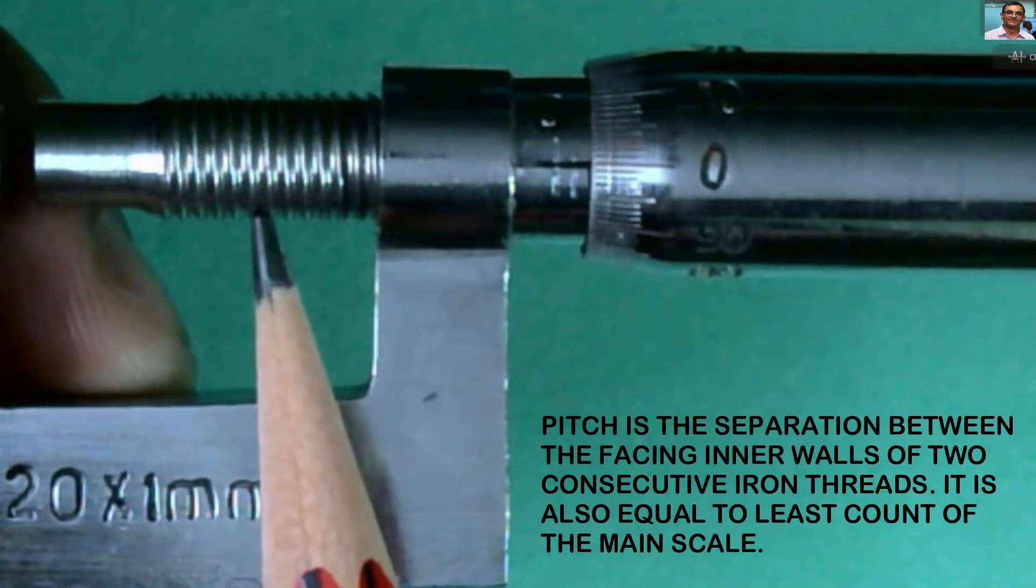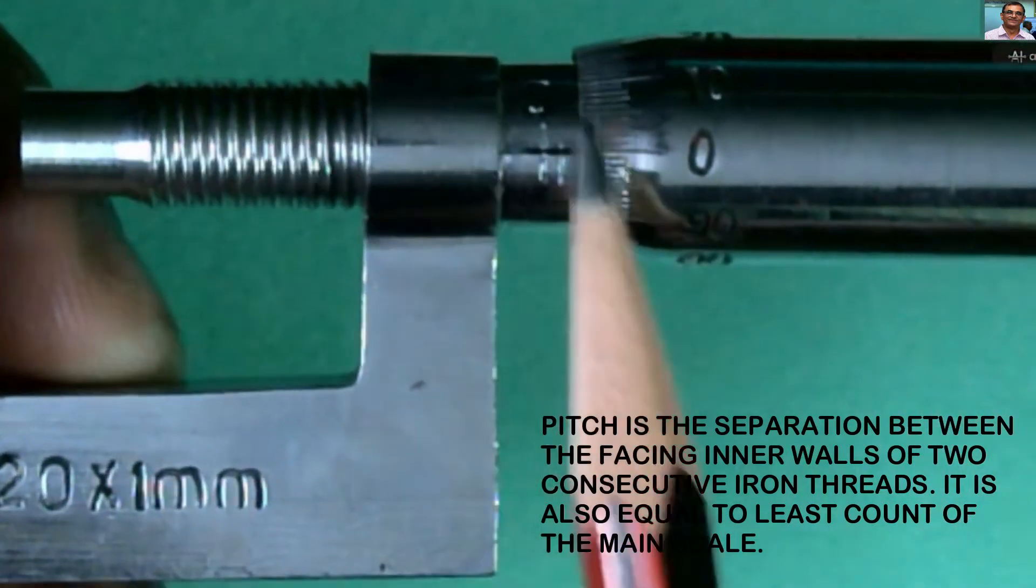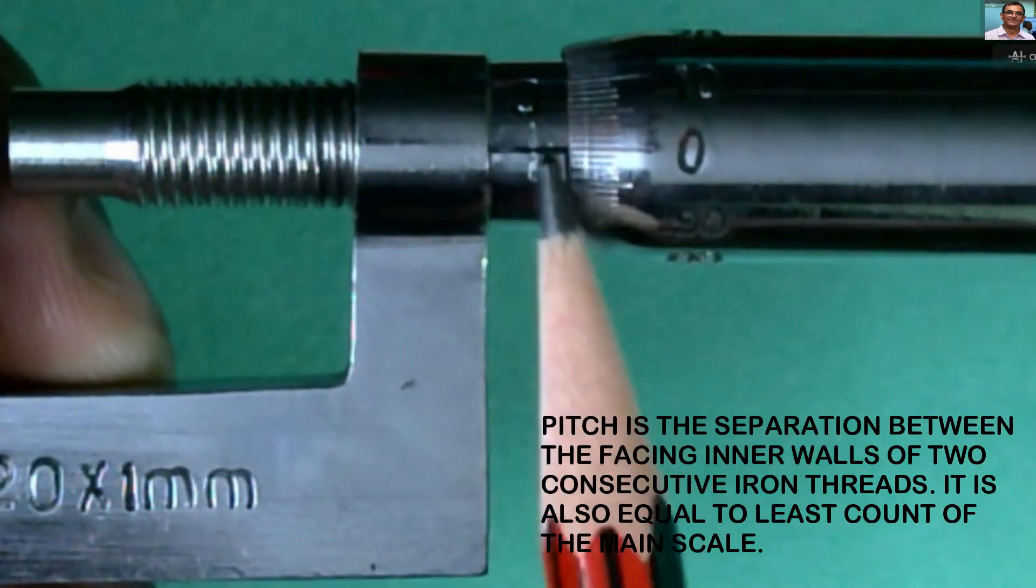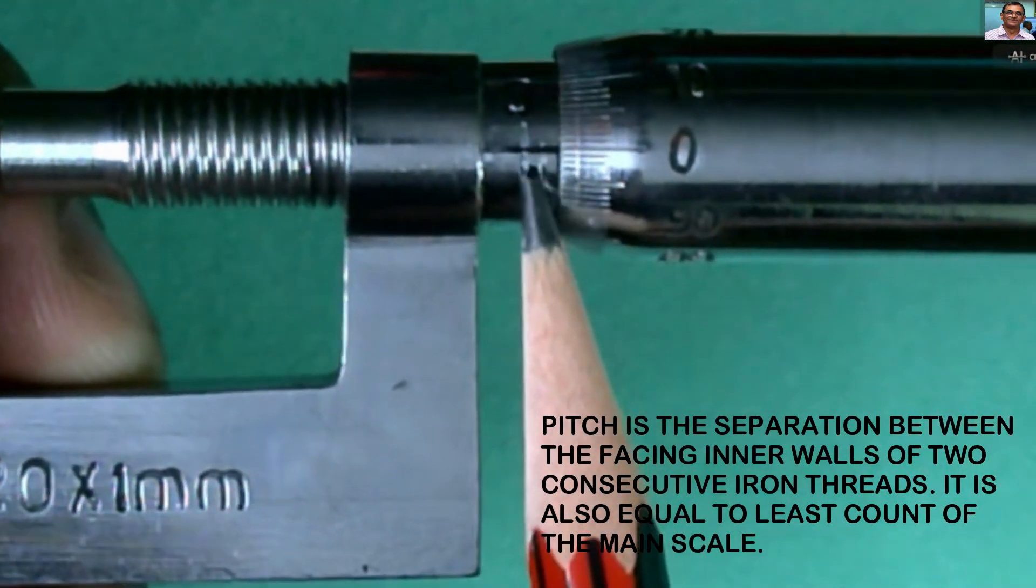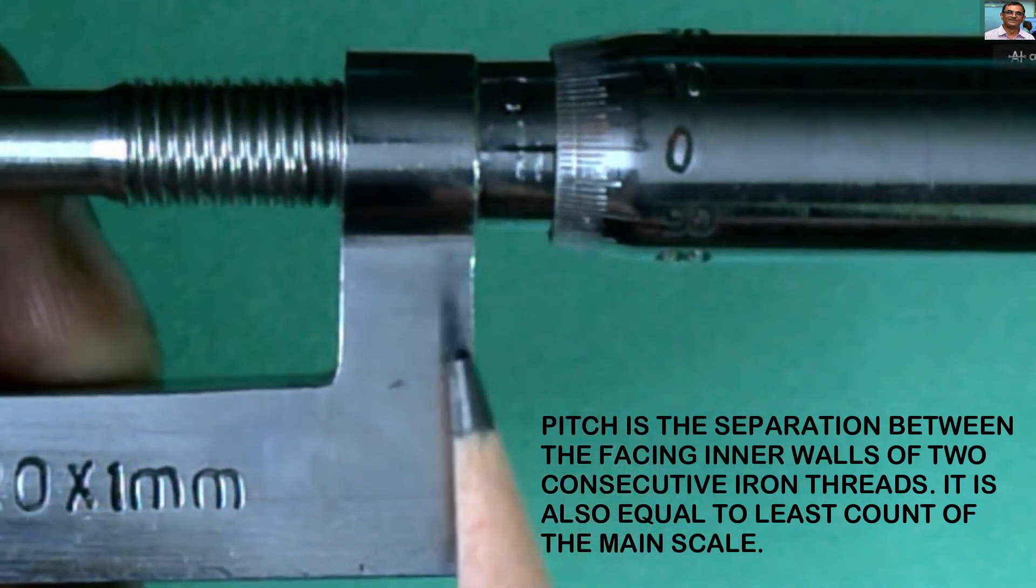If you want to find out the pitch, what you should be doing is look at over here. This is the reference line. On the reference line, the meter scale has been etched. The separation between any two consecutive divisions is 1 mm.